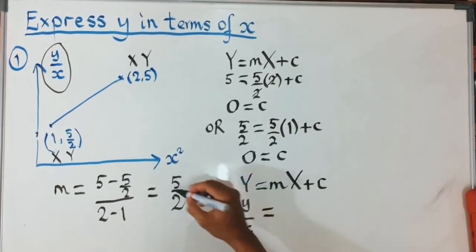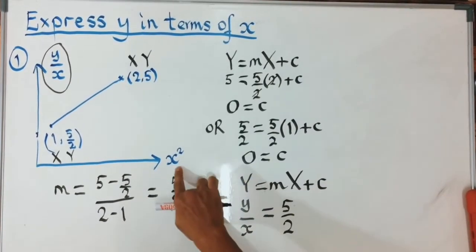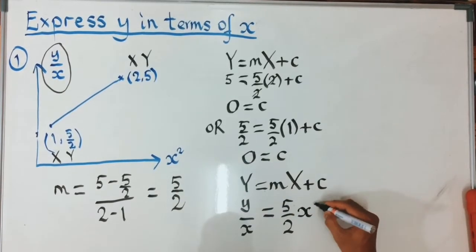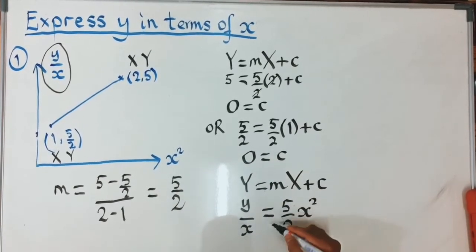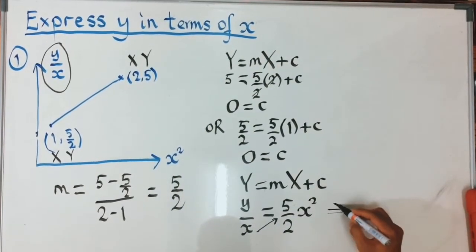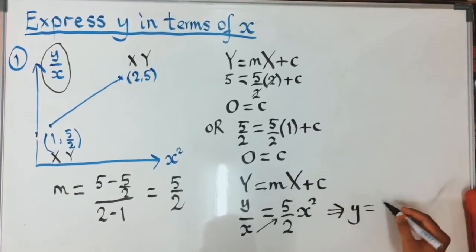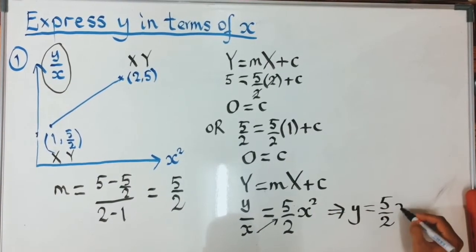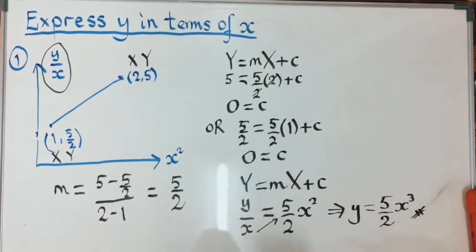The gradient m is 5/2, and capital X is from the horizontal axis, which is x squared. Since c is zero we don't write it. The equation says to express y in terms of x, so we cross multiply. The final answer is y equals (5/2) x to the power of 3. That is how we express y in terms of x — just find the gradient and substitute the points.